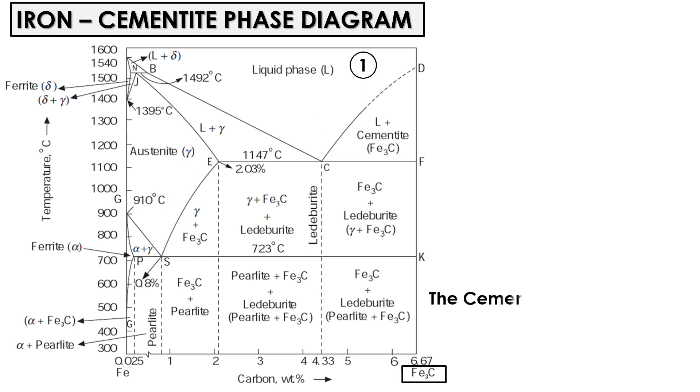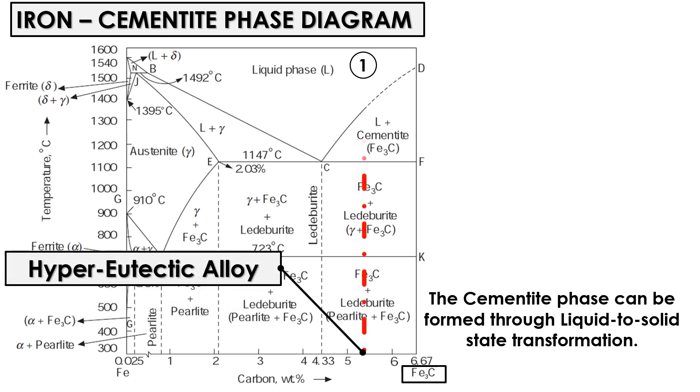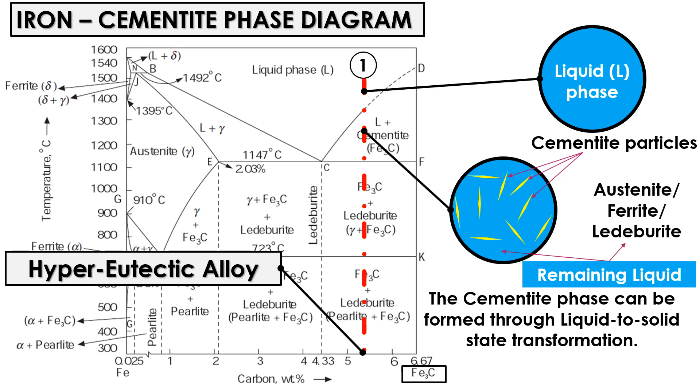The cementite phase can be formed through liquid to solid state transformation. For example, when the iron carbon liquid alloy of hyper-eutectic composition solidifies, cementite forms as primary particles in the remaining liquid. As the solidification process continues, the liquid solidifies into austenite or ferrite, depending on the cooling rate and alloy composition. This type of transformation is known as liquid to solid state transformation.